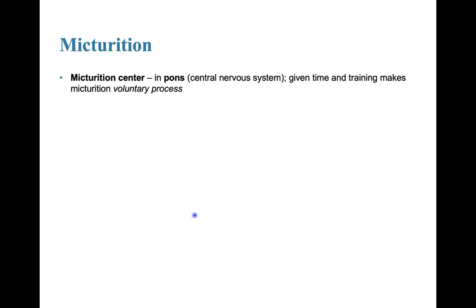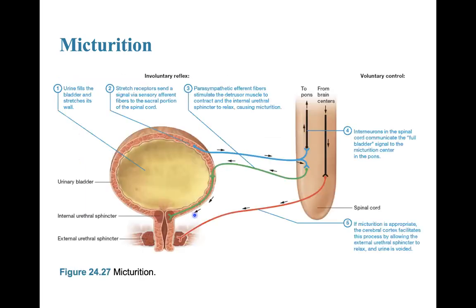The micturition center is located in the pons. Given time and training, micturition becomes a voluntary process. As urine fills in and stretches the bladder walls, stretch receptors and parasympathetic fibers initiate the reflex arc, then the muscles relax and urination occurs.